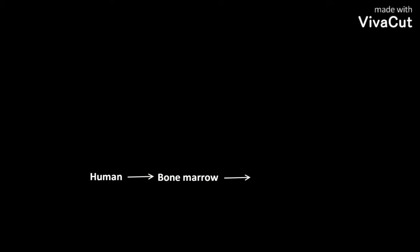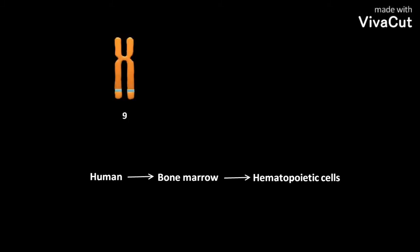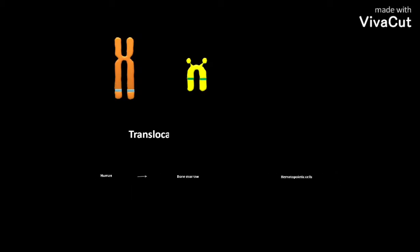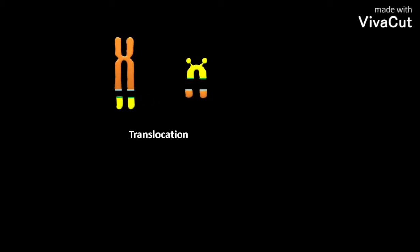The human bone marrow contains hematopoietic cells. In these hematopoietic cells, chromosome number 9 contains the ABL gene, whereas chromosome number 22 contains the BCR gene. These two genes undergo translocation, which produces the der9 and der22 chromosomes.